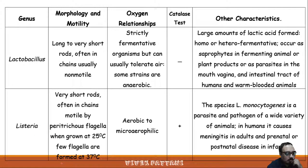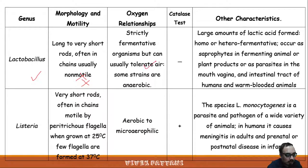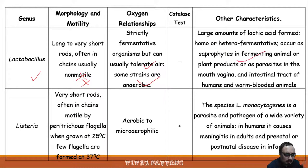Lactobacillus: morphology and motility — long to very short rods, often in chains, usually not motile. Oxygen relationship: strictly fermentative organisms but can also tolerate air, and some strains are purely anaerobic. Catalase is negative for Lactobacillus. They produce large amounts of lactic acid and homofermentative strains. They occur as saprophytes in fermenting animal and plant products, or as parasites in the mouth, vagina, and intestinal tract of humans and warm-blooded animals.